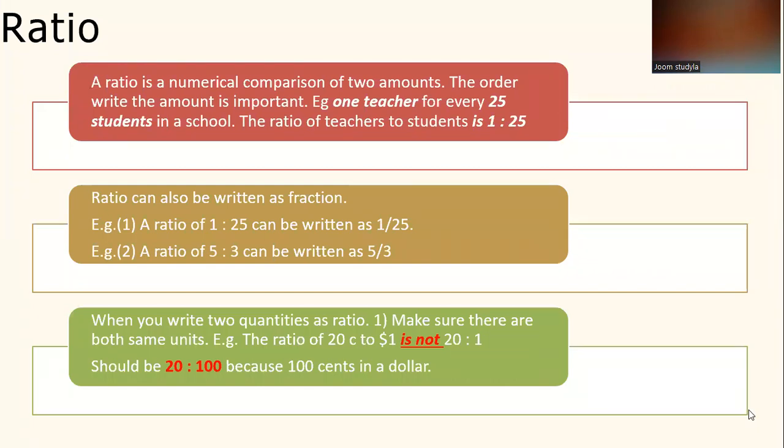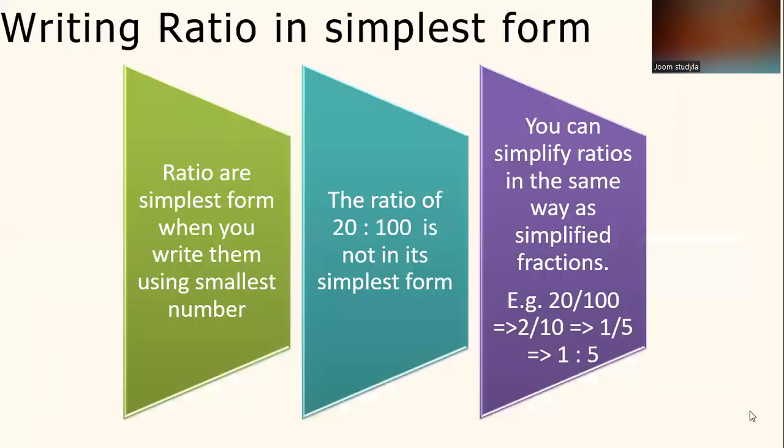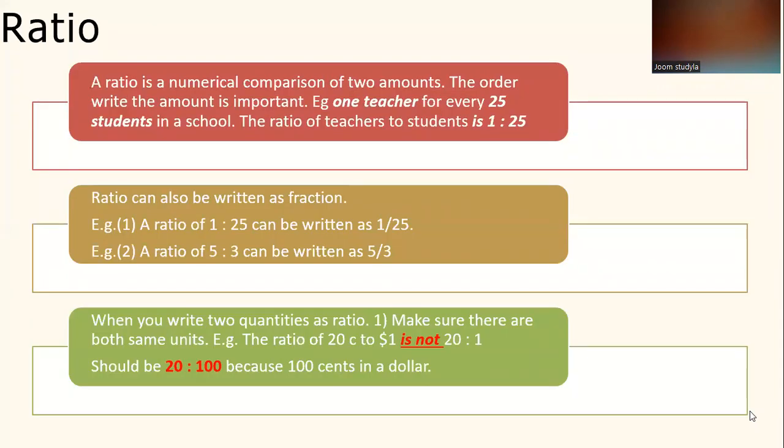Ratio. A ratio is a numerical comparison of two amounts. The order you write the amounts is important. For example, one teacher for every 25 students in a school. The ratio of teachers to students is 1 to 25.